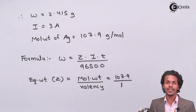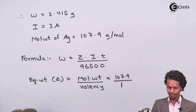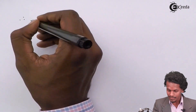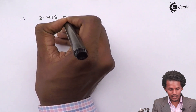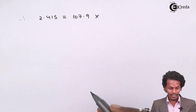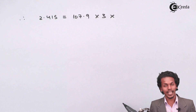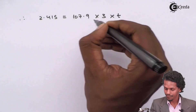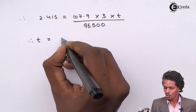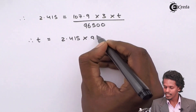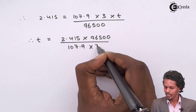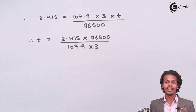Substituting all values: 2.415 = 107.9 × 3 × T / 96500. Rearranging, T = (2.415 × 96500) / (107.9 × 3). Let us now calculate this.